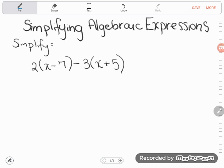So first of all, let me just read this. It says 2 times the quantity of x minus 7. I say times the quantity because this 2 is multiplying everything in this parenthesis. So 2 times the quantity of x minus 7, minus 3 times the quantity of x plus 5.